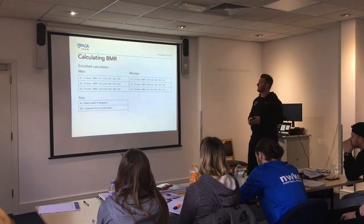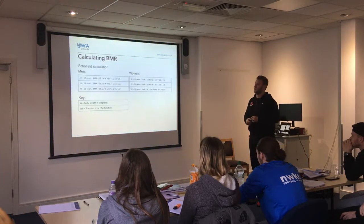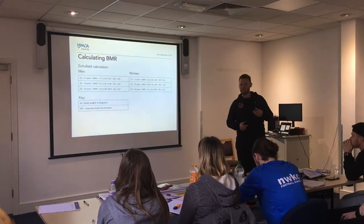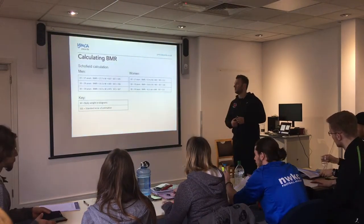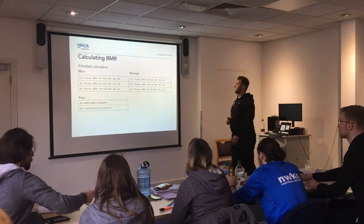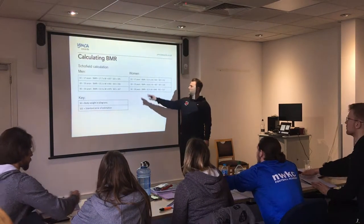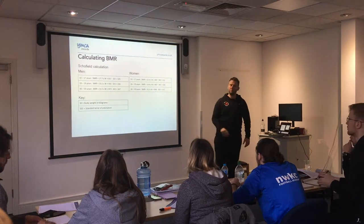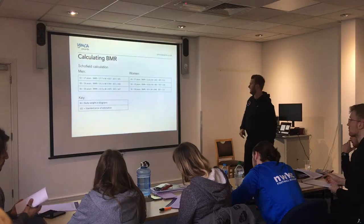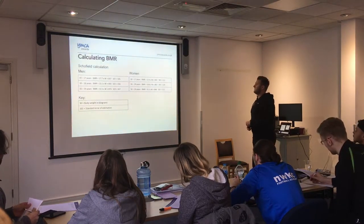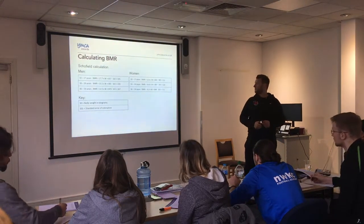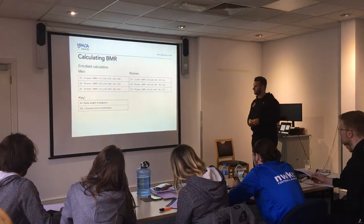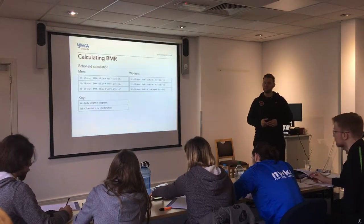So this is a basic calculation using the Schofield calculation that I'm going to ask you to do now. With your pens and paper, work out your Schofield calculation. Basically what you're doing is taking whether you're male or female, you take your age, pick your age bracket, and your BMR equals the number in the box times weight in kilograms, plus the other number in the box. It's going to be different for everyone.